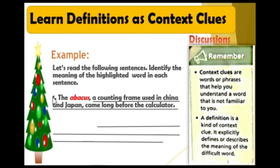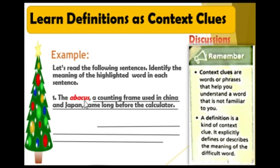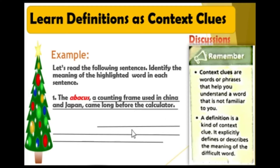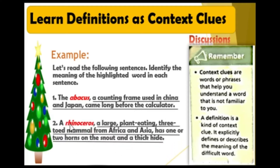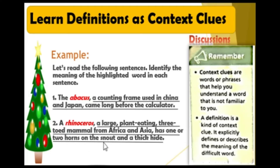In the following example sentences, we are going to read and identify the meaning of the highlighted word in each sentence. In the first sentence, our context clue is the word 'abacus.' Let's read: 'The abacus, a counting frame used in China and Japan, came long before the calculator.' In the second sentence, the highlighted word is 'rhinoceros.' Let's read: 'A rhinoceros, a large plant-eating mammal from Africa and Asia, has one or two horns on its snout and thick hide.' That is how we identify context clues and definitions.